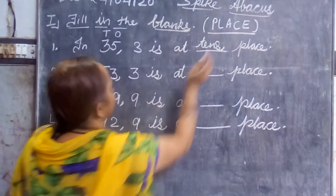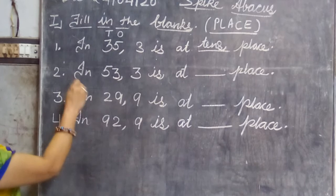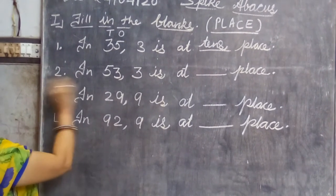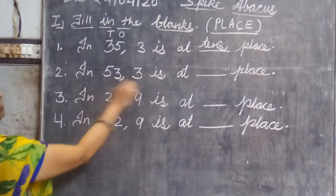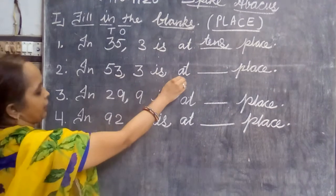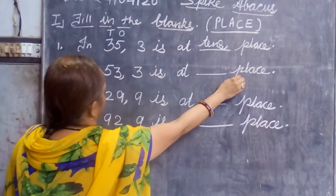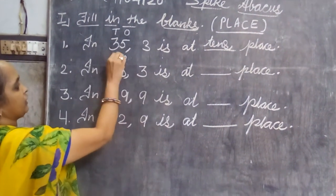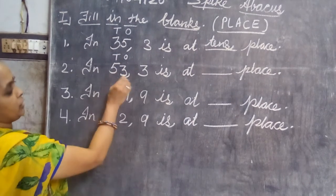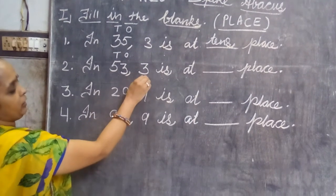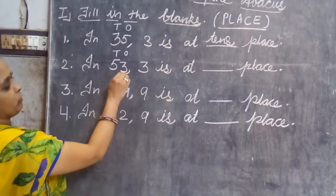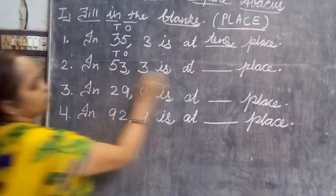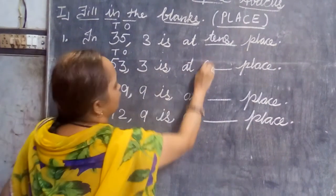Now the same thing if the reverse is there, in the next question. In fifty-three, three is at dash place. Now again write here ones and write here tens. Now three is asked. So we will see where is three? At below ones. So we will write here: ones.